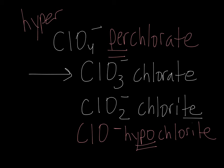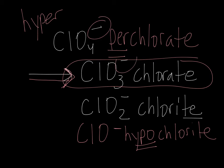So to just review, all you need to memorize is the -ate form of any polyatomic anion. One less oxygen is -ite, two less oxygens is hypo-something -ite, and one more oxygen than the chlorate or the -ate form is the per- form. Notice that the charge does not change.